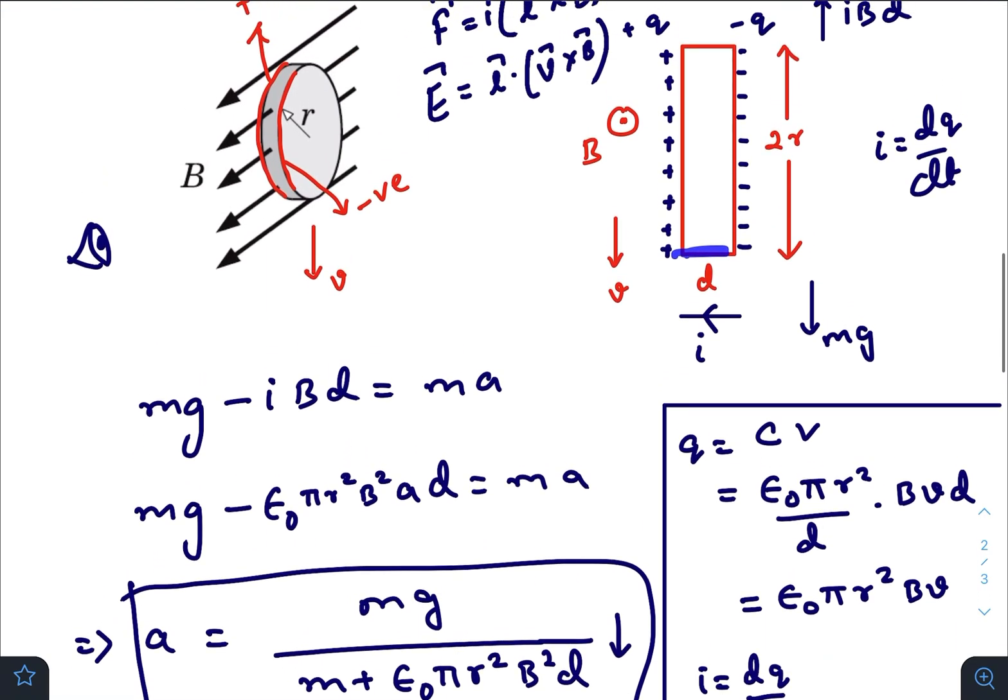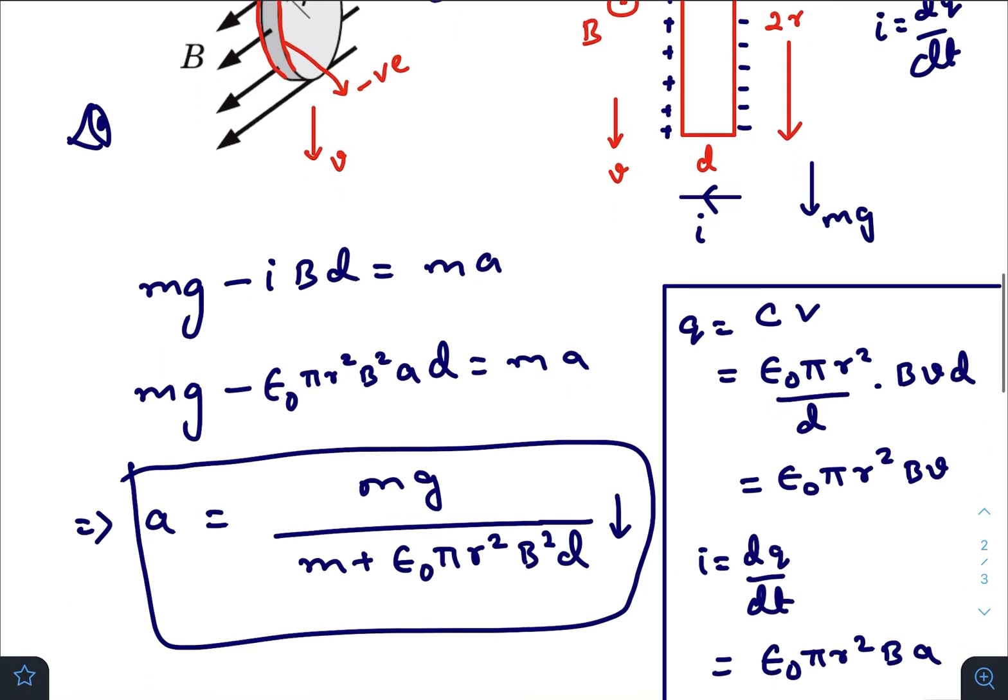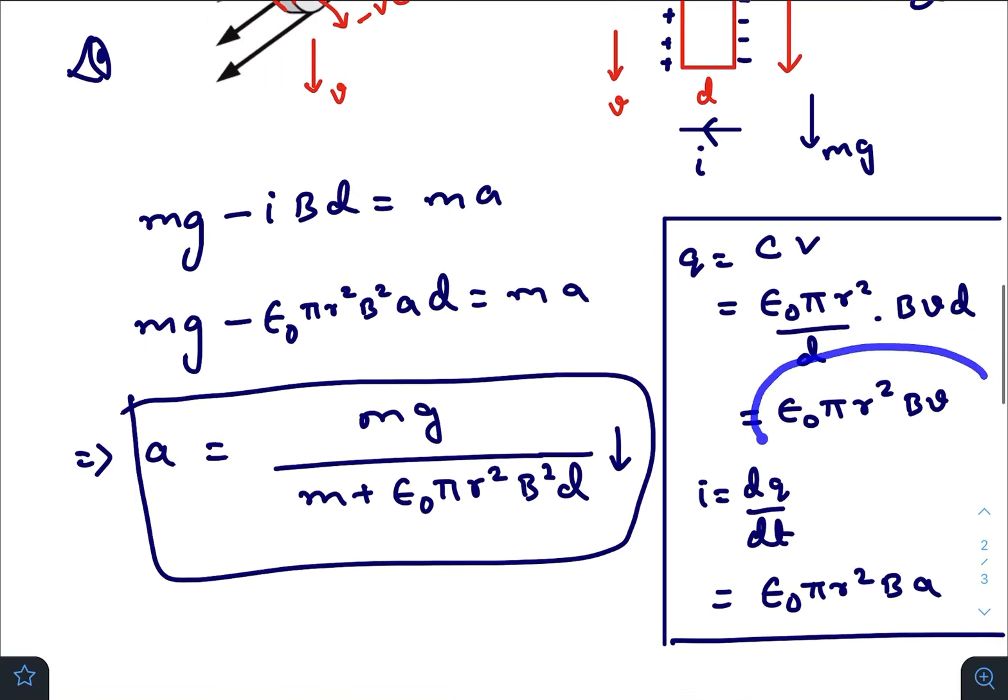And V cross B is 90 degrees, because V is downwards, B is in the direction coming out of the screen. The potential difference at any instant, that is the motional EMF, would be B V D, creating a total charge of epsilon naught pi r square B V.